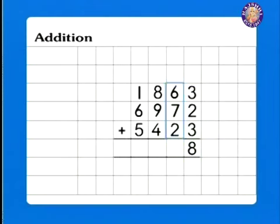3 plus 2 plus 3 is 8. Then 6 plus 7 plus 2 is 15. 5 goes down, carry over 1. Adding 1 to 8, 9, and 4, we get 22. One of the 2's goes down and carry over the other one. And last, but not the least.